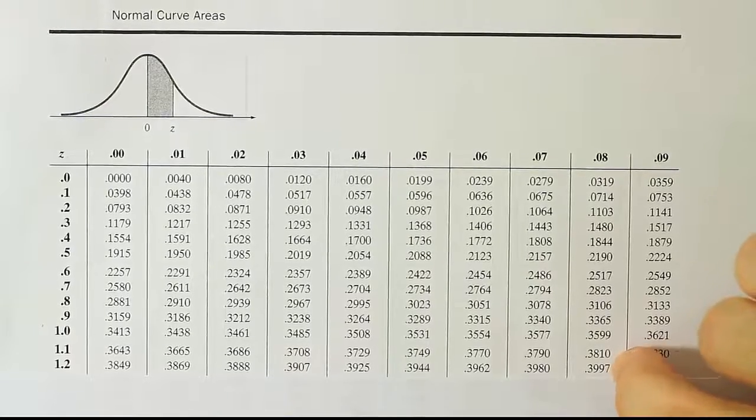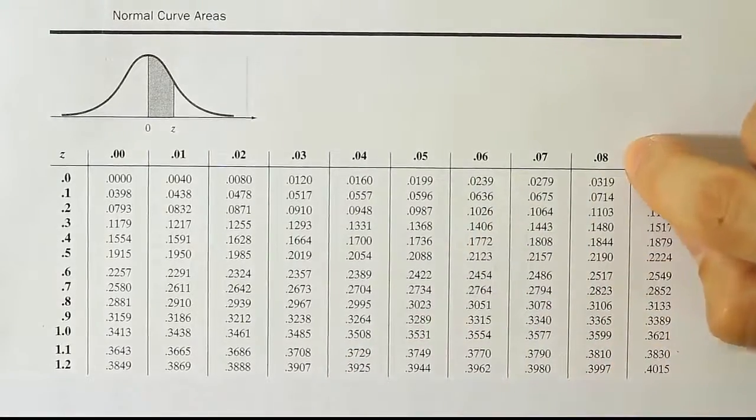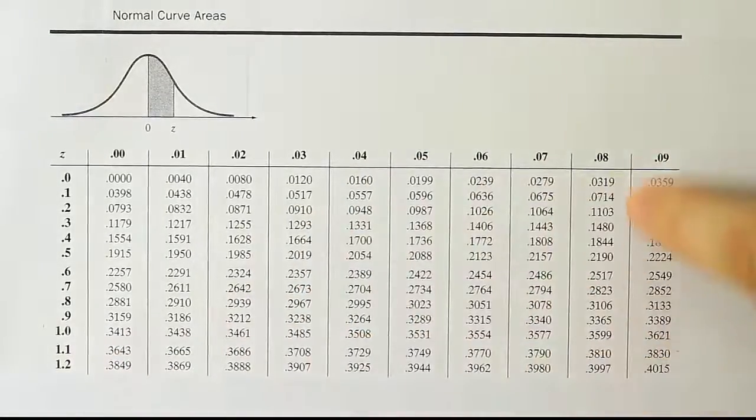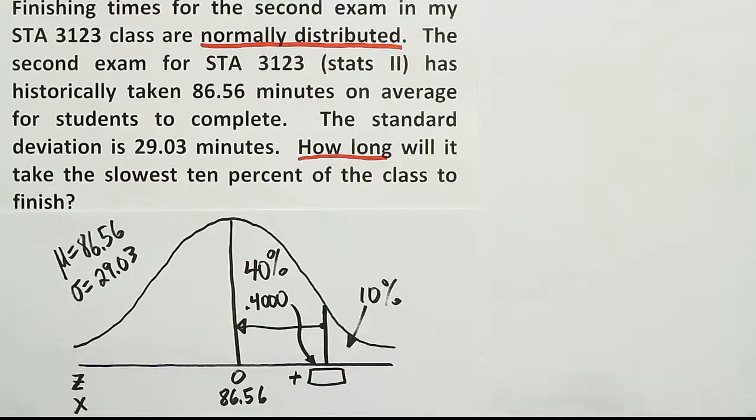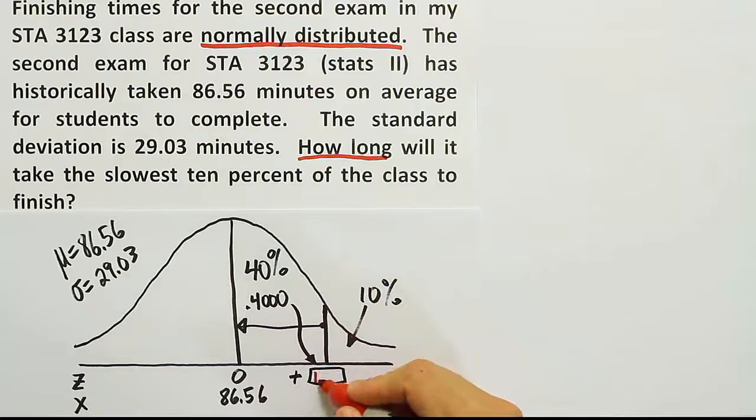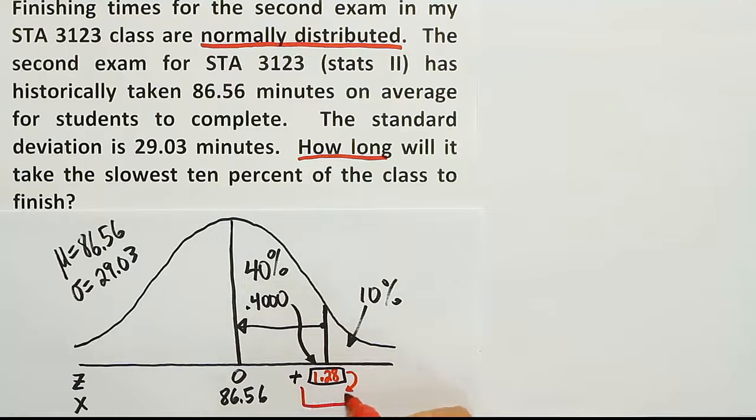And that z-score that corresponds to that area which is closest to 40% is 1.28. So that's the z-score we'll use in our problem. So the z-score associated with this area or the closest z-score to this area seems to be 1.28. Now from that z-score we want to figure out the finishing time. So we have the z-score for the finishing time but in order to finish the final part of the problem, we need to know what's the finishing time associated to that z-score.